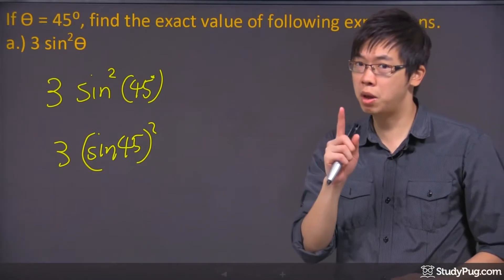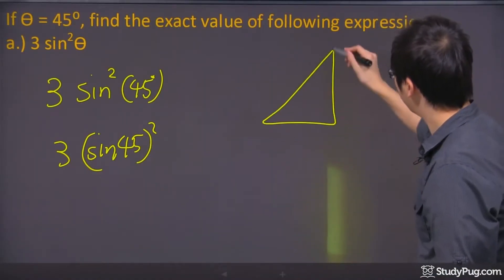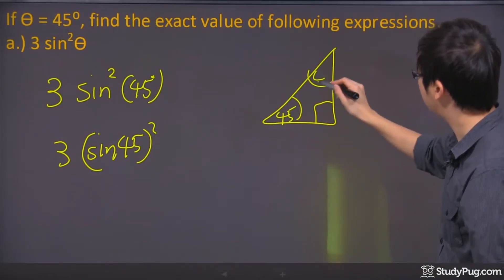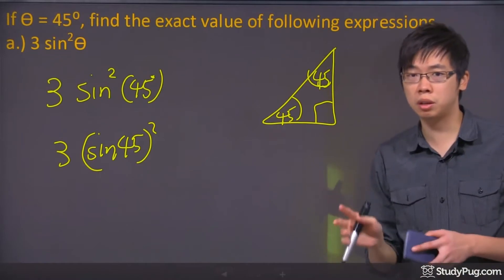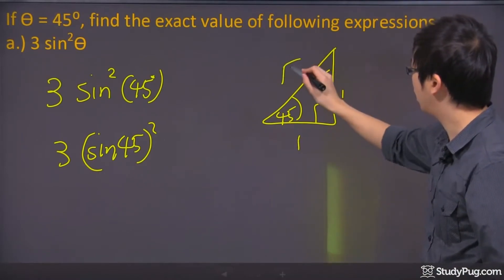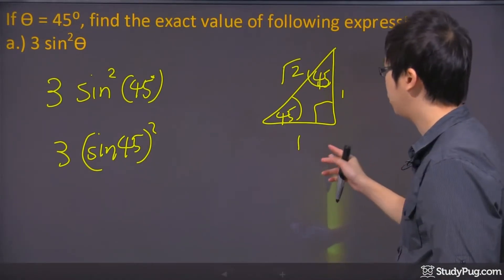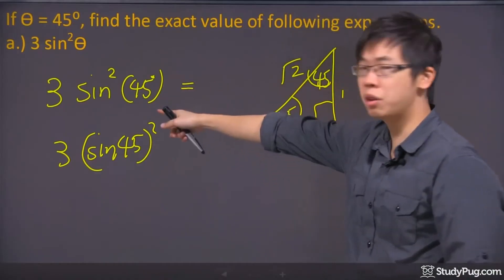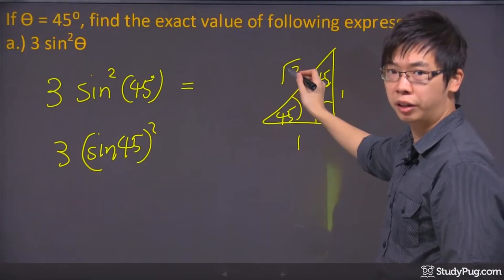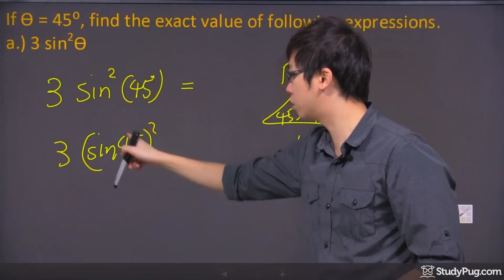You can use your calculator, but remember, 45 degrees is one of the special triangles. So you have a right triangle with 90 degrees, 45, and 45. If you have this special triangle, the ratio is going to be 1, 1, and root 2 for the hypotenuse. So sine of 45 is going to be opposite over hypotenuse, which gives you 1 over root 2.